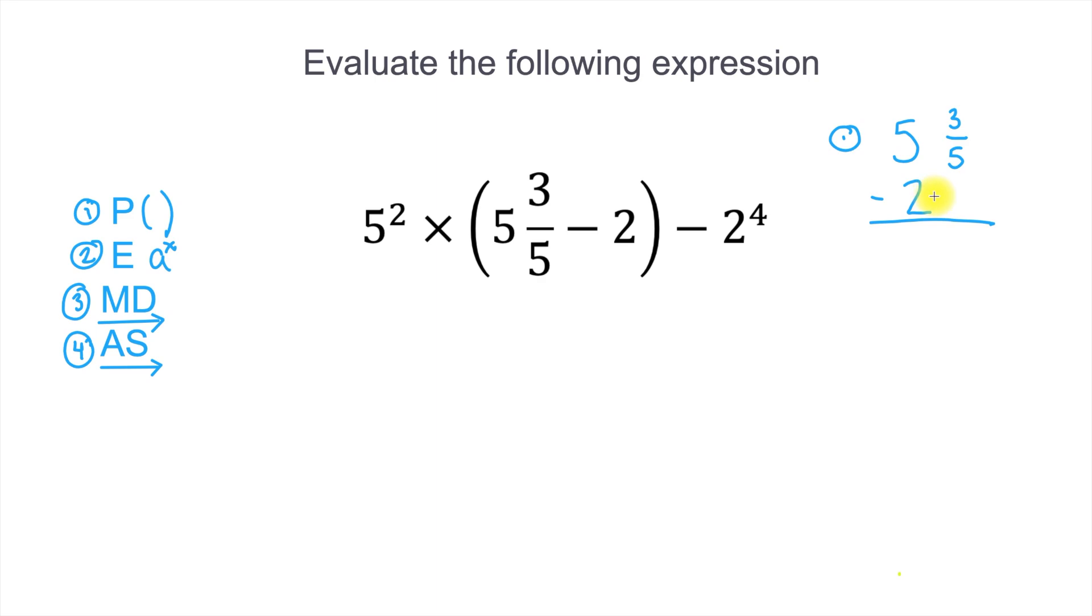Now that's not too bad, because here we have our whole numbers lined up and our fractions lined up. But the second number is a whole number, so there's really no fractions. So it's like saying 3 fifths minus 0, and that's just 3 fifths. And then I've got 5 minus 2, and that's just 3. So the result of our work in parentheses, which is 5 and 3 fifths minus 2, is 3 and 3 fifths. So I'll write that right below.